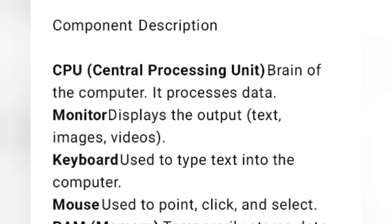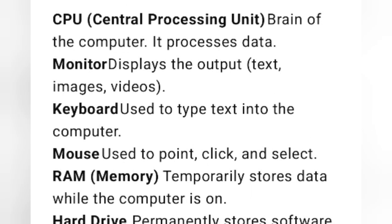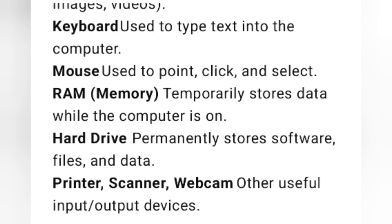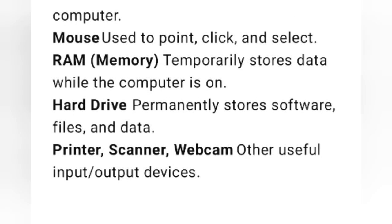Then keyboard, which is used to type text into the computer. Then mouse, which is used to point, click and select. Then RAM, or random access memory, which temporarily stores data while the computer is on. Then hard drive, which permanently stores software, files and data.